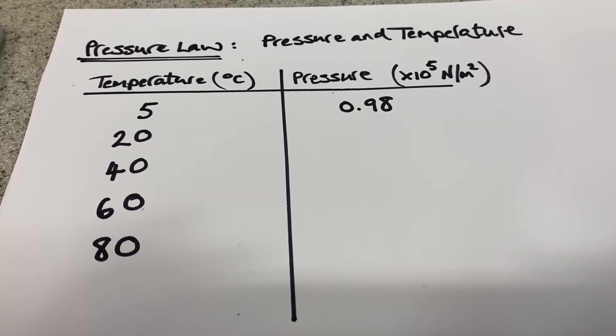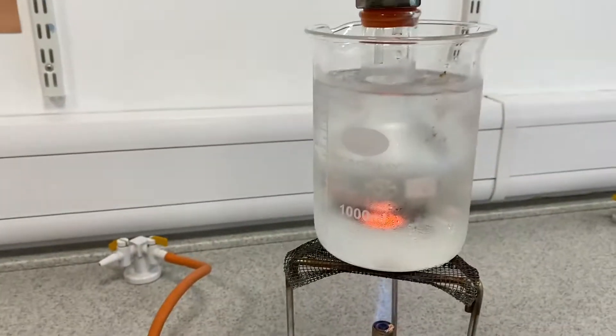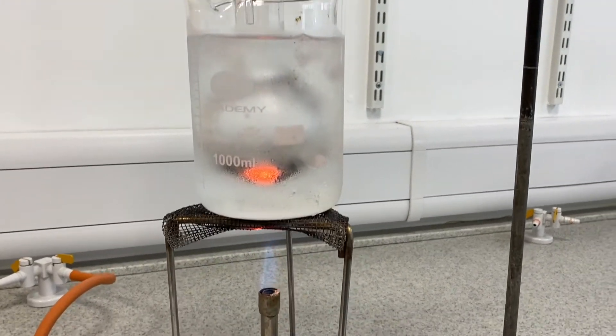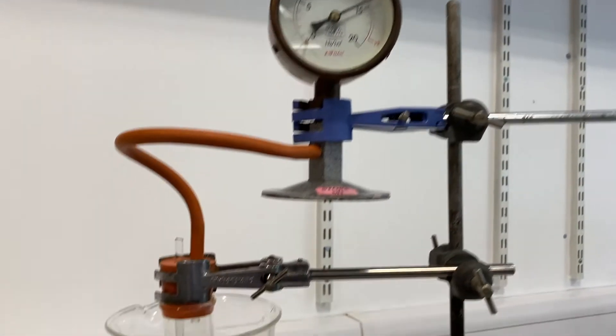So we're going to heat the water and every 20 degrees we're going to measure the temperature and measure the corresponding pressure on the pressure gauge.